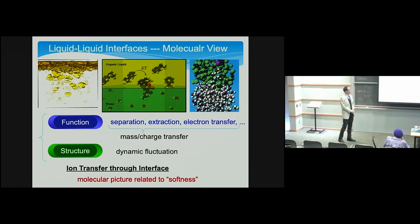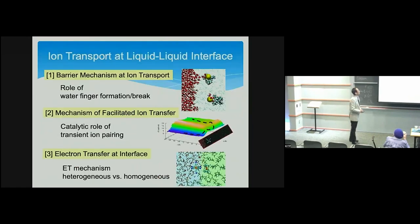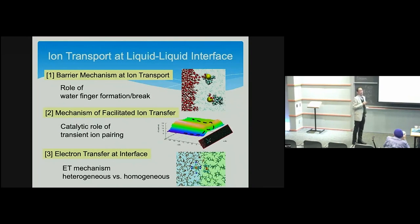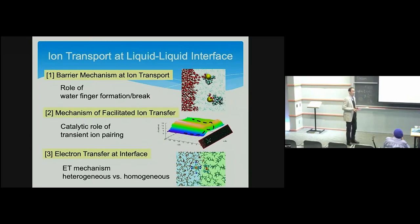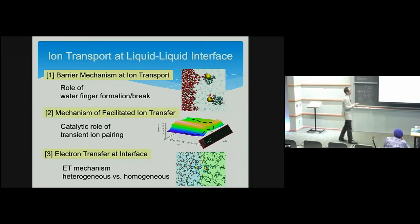I have prepared three topics. The first is the barrier mechanism of ion transport — ion transport has intrinsic barriers. The second is the mechanism of facilitated ion transfer, where sometimes ion transfer is facilitated dramatically in a catalytic manner with some selectivity. The third is electron transfer at interfaces, which is driven by solvation according to Marcus theory, and liquid interfaces provide a very special solvation environment.